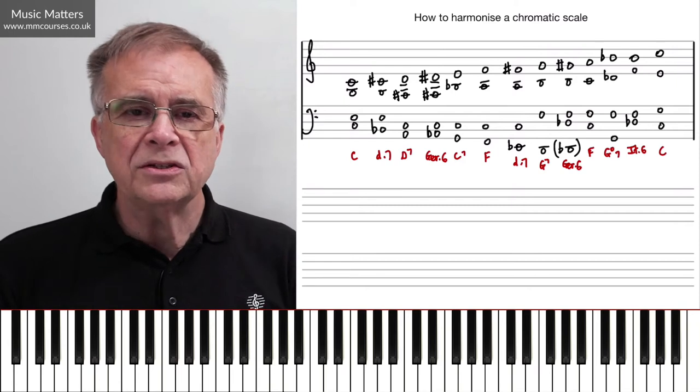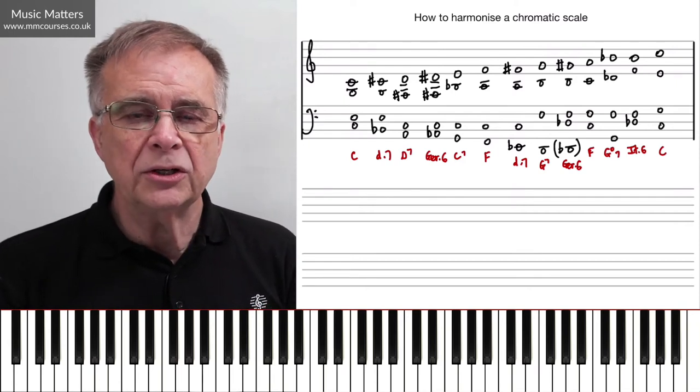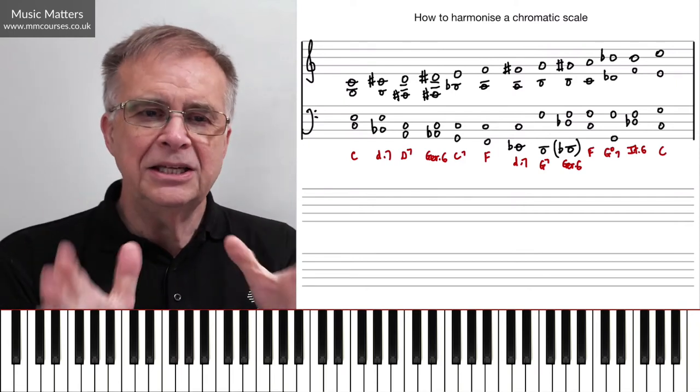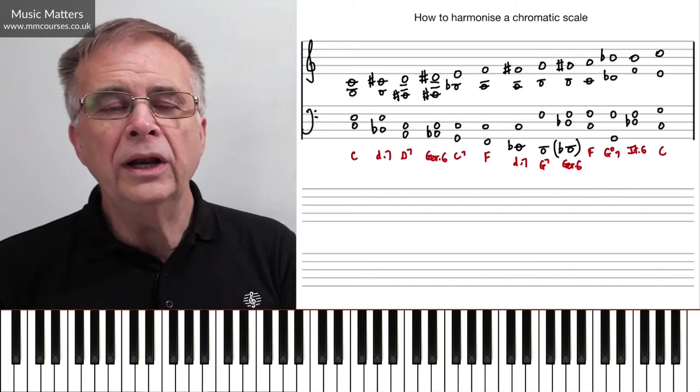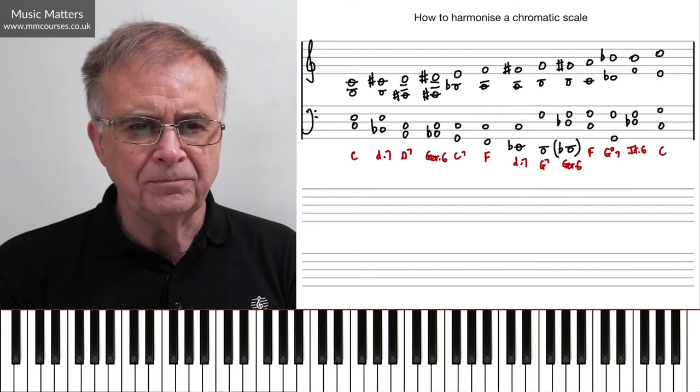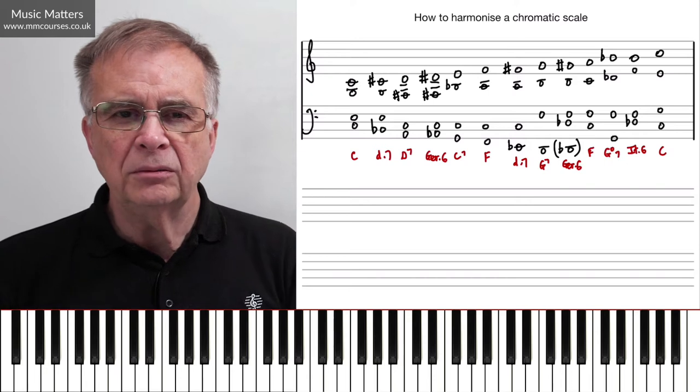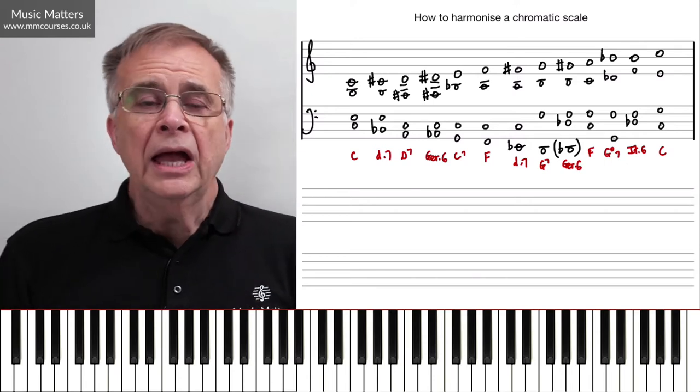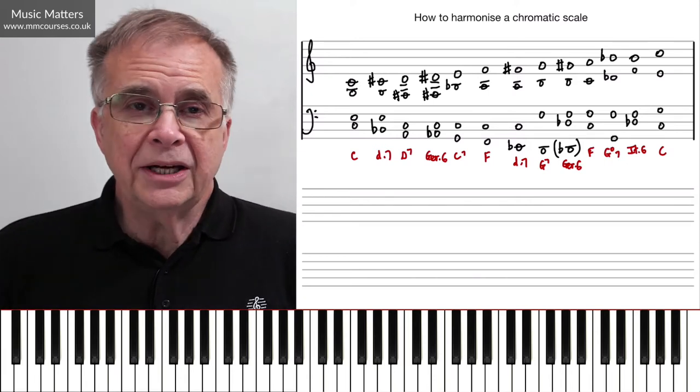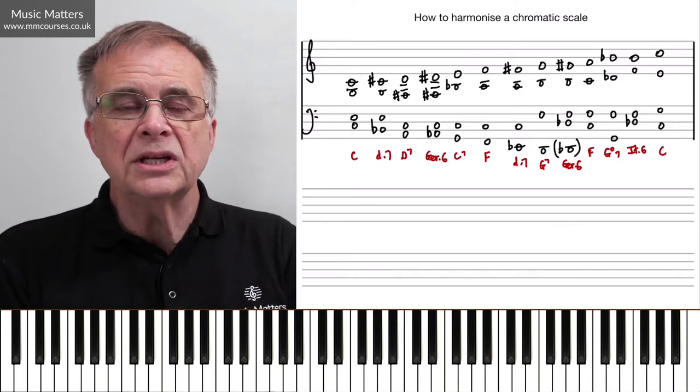When you're using a chromatic scale, you can't really allow chords to function in that way, or chords just simply don't function in that way. So you've got to take a different approach to it. There are lots of different ways in which you can harmonize a chromatic scale, but in this video, I'm going to focus on one possible way of doing it.